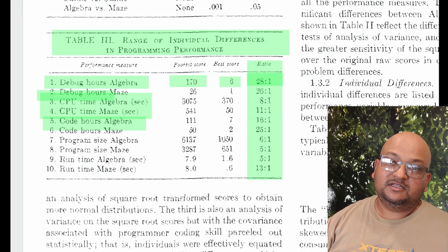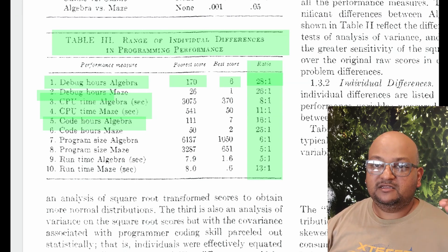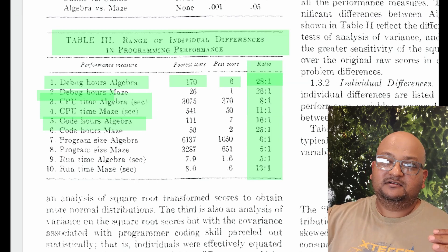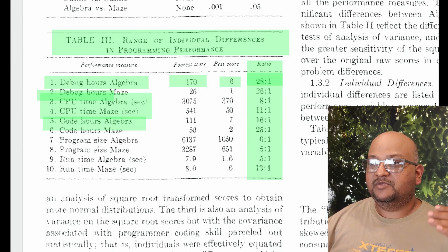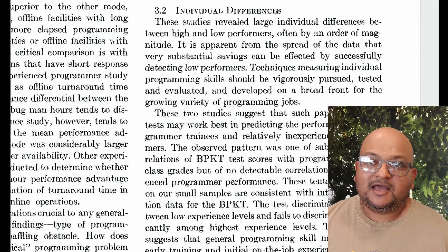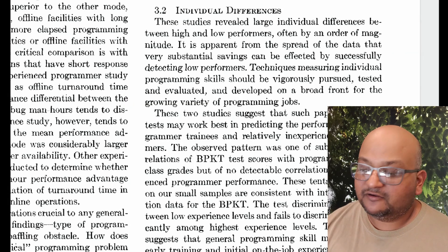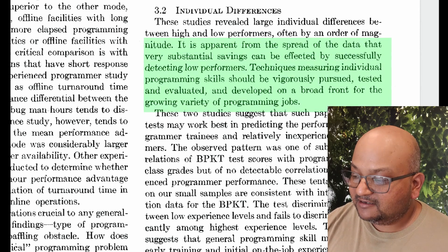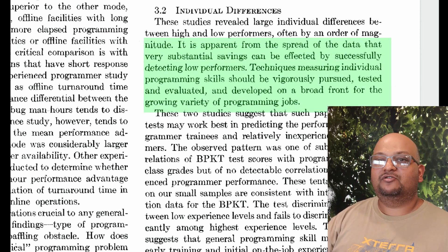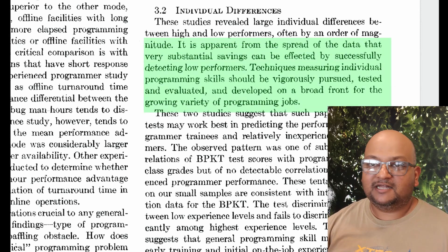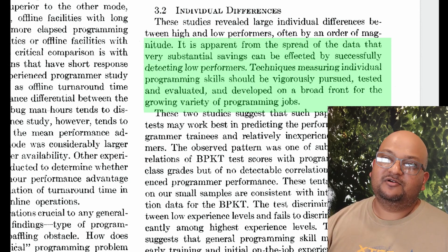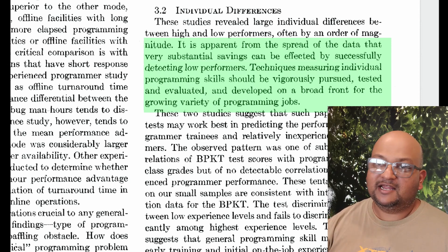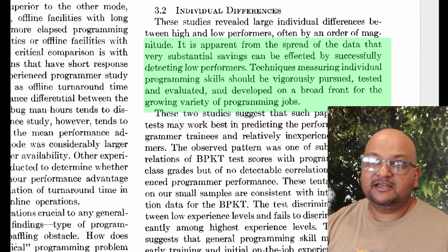Note that these ratios are between the worst and the best — it is a very common misconception that these ratios are between the average and the best. As a result of this data, the authors proposed that if we could weed out the bad programmers and keep only the superstar great ones, our projects would move much faster. They suggested measuring programmer productivity continuously to weed out low performers.